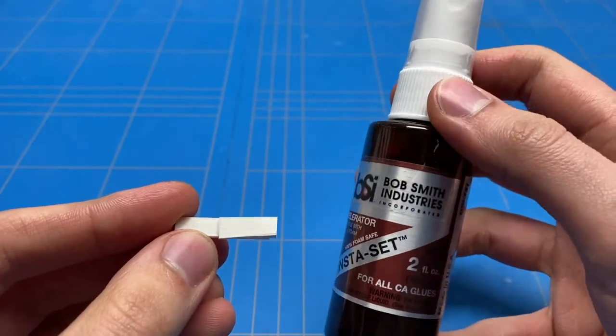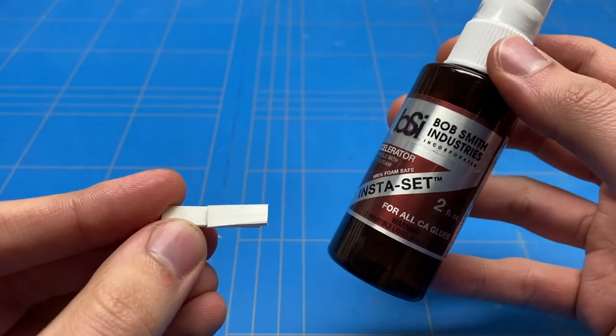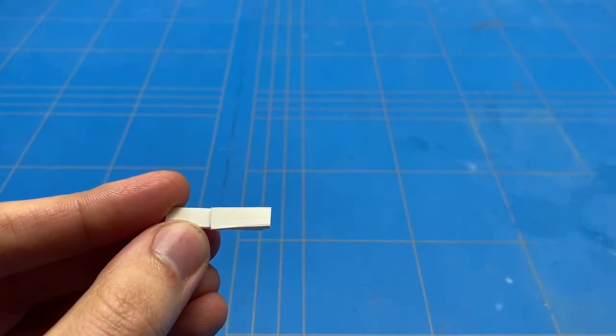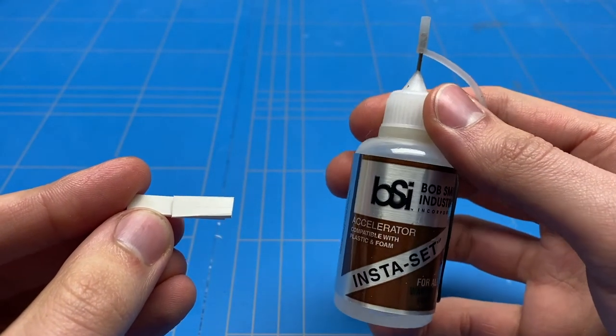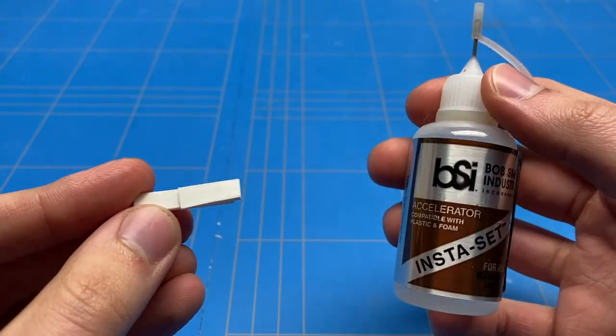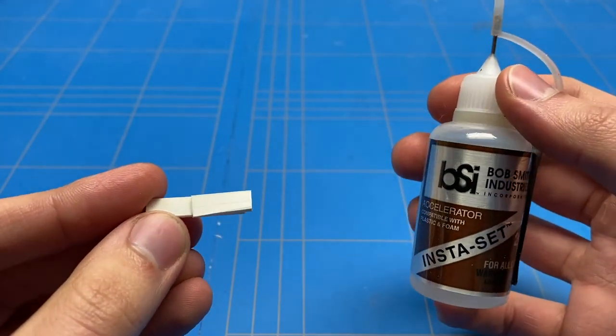So you can apply it by spraying it on, just applying a little bit. In my case, I like to put it into a small dropper bottle, which just keeps it a bit more contained and not spray it all over.